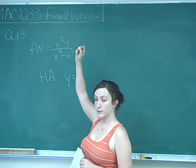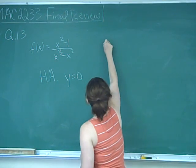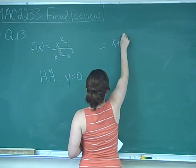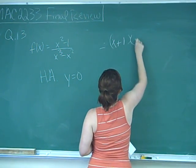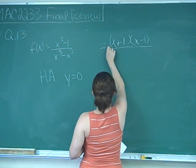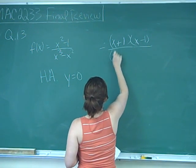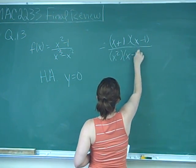So I'm actually going to factor the numerator and the denominator out, and that will give me (x+1)(x-1) over x squared times (x-1).